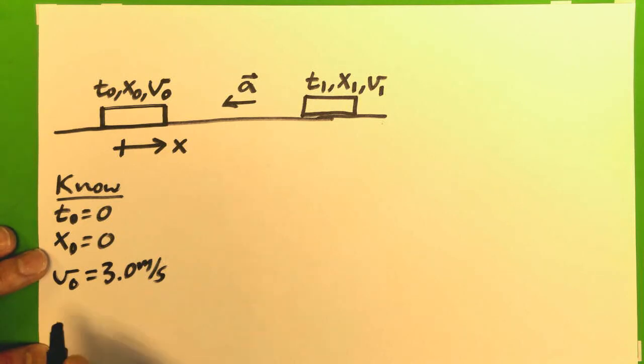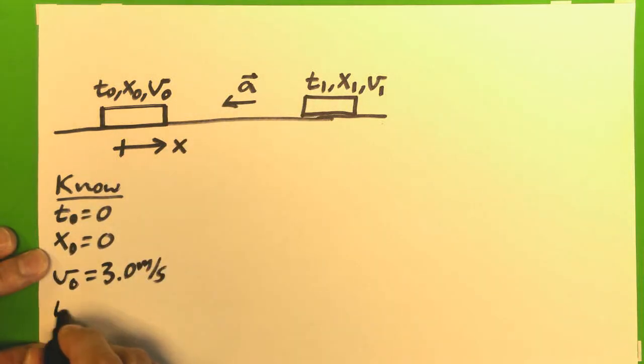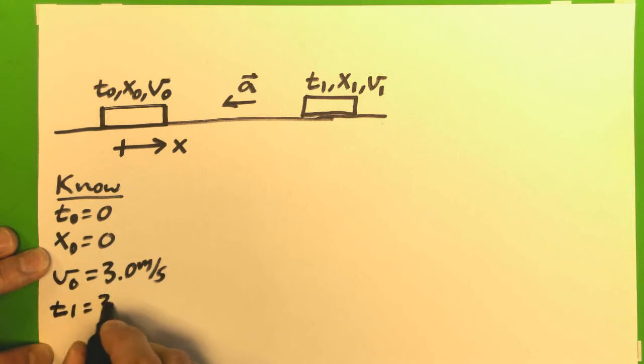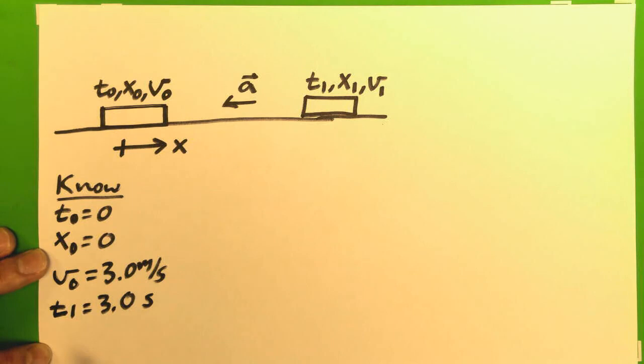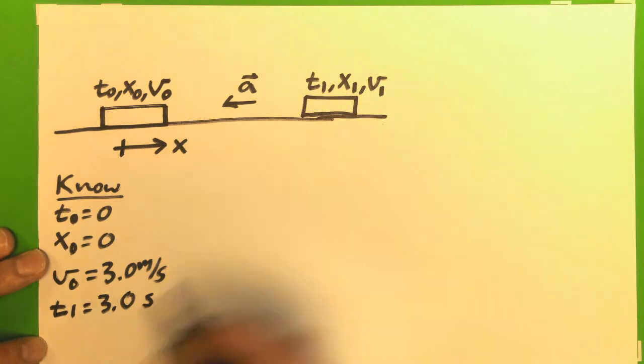And now, I don't know my acceleration, I do know my final time, let's say that's 3 seconds later. You can see I'm being lazy with my numbers, so the calculations are straightforward. I don't know where it ends, but I do know how fast it's going, it's a hidden zero there. That's V1 equals zero because it stops.